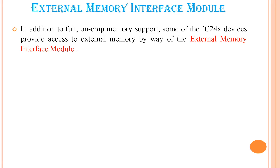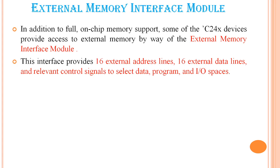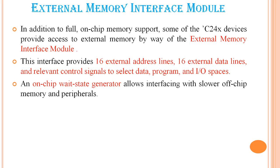Finally, the external memory interface module. In addition to full on-chip memory support, some of the C24X devices provide access to external memory by way of an external memory interface module. This interface provides 16 external address lines, 16 external data lines, and relevant control signals. An on-chip wait state generator allows interfacing with slower off-chip memory and peripherals.